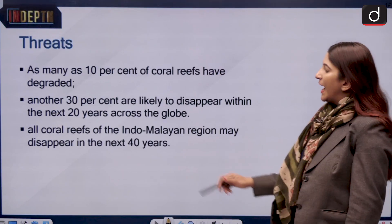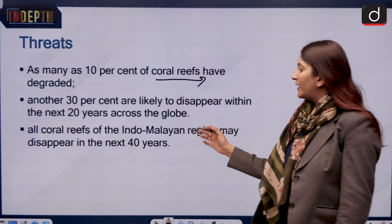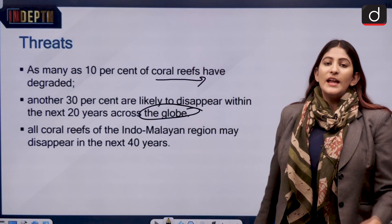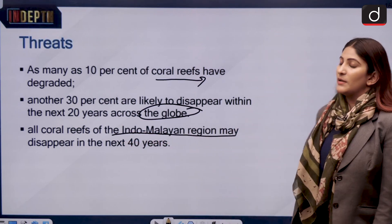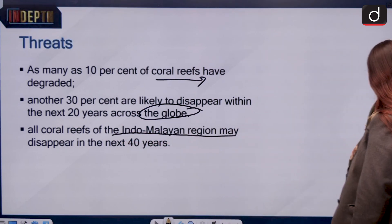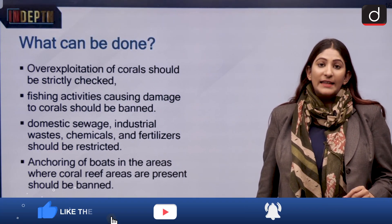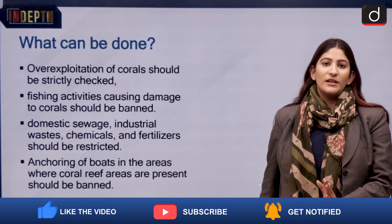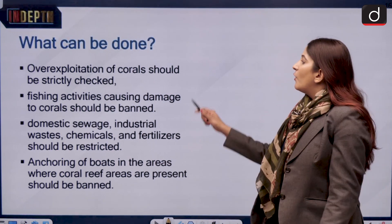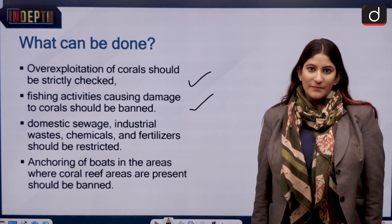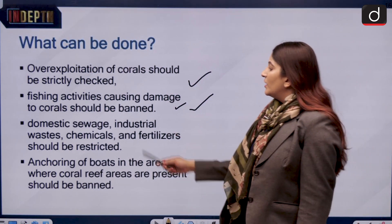As many as 10% of coral reefs have already degraded, and another 30% are likely to disappear within the next 20 years. If proper steps are not taken, all coral reefs of the Indo-Malayan region may disappear in 40 years. It is important to have an integrated coral management plan — not just area-specific but globally — with policies and delegated oversight to curb over-exploitation.